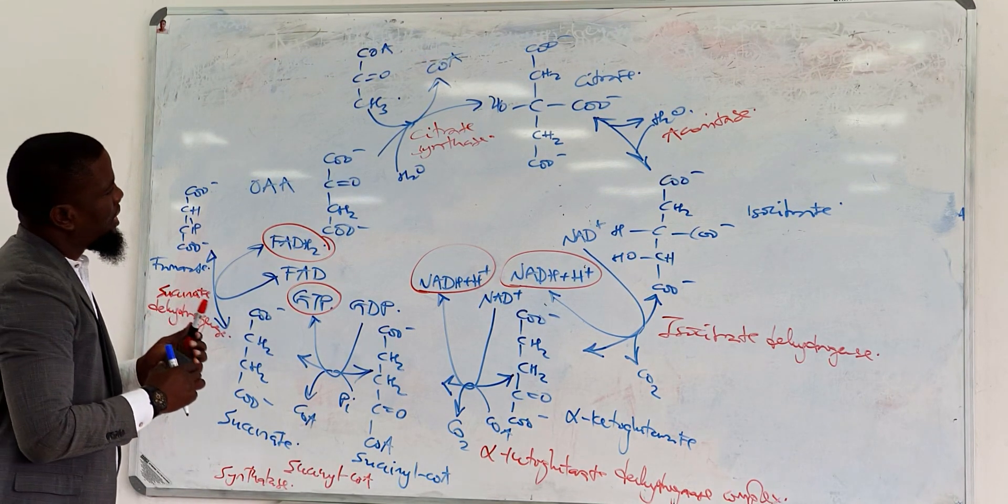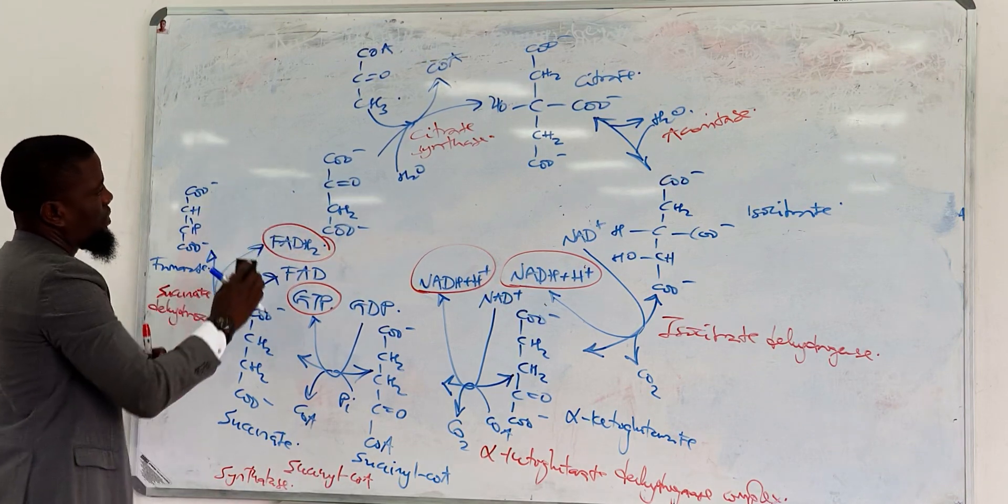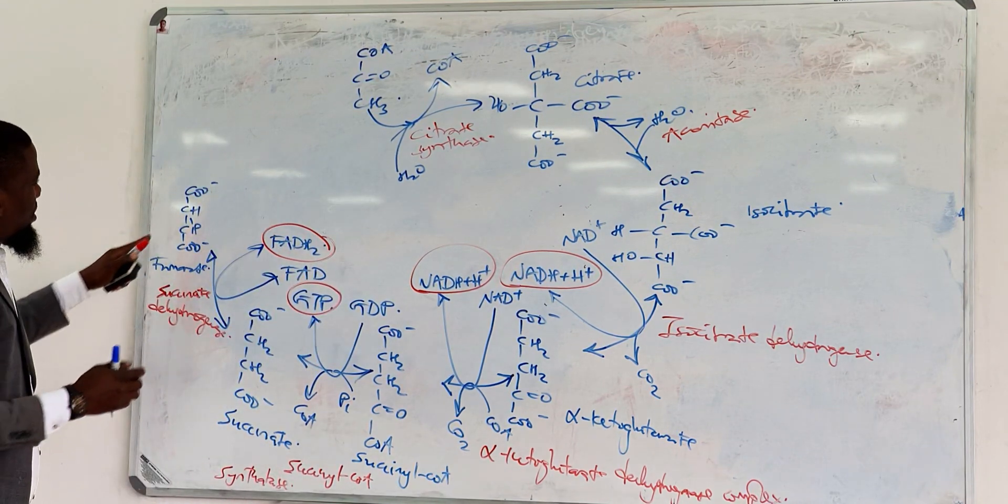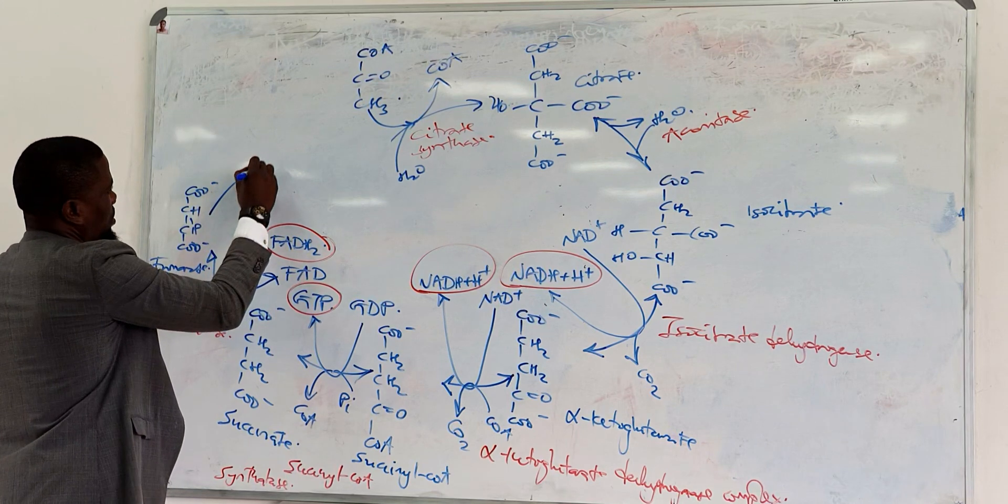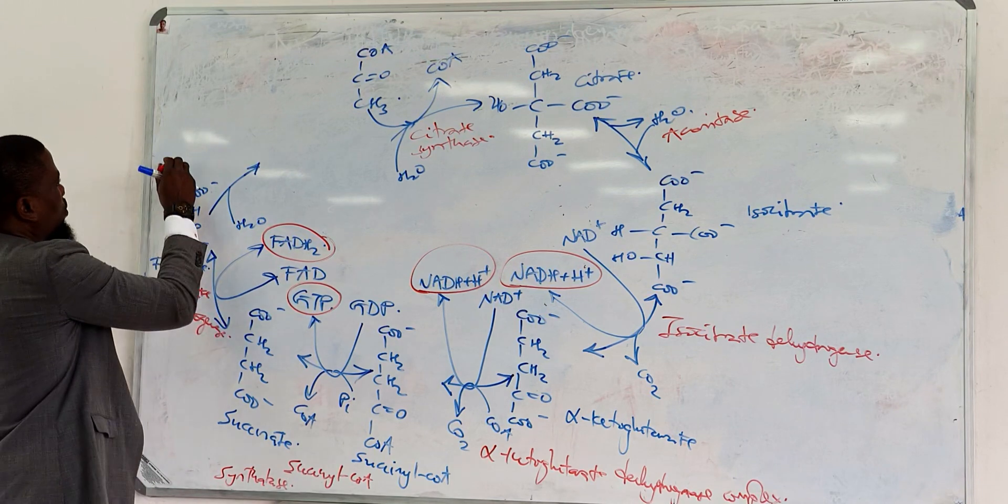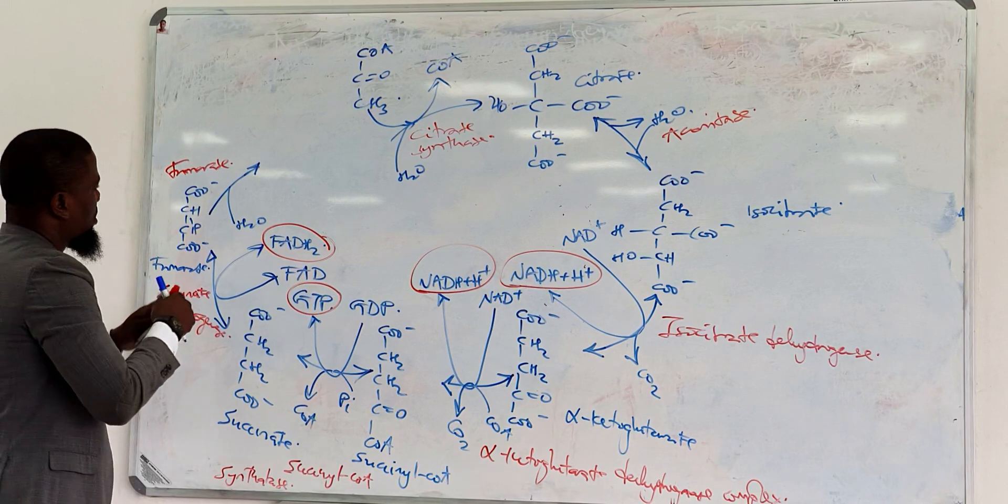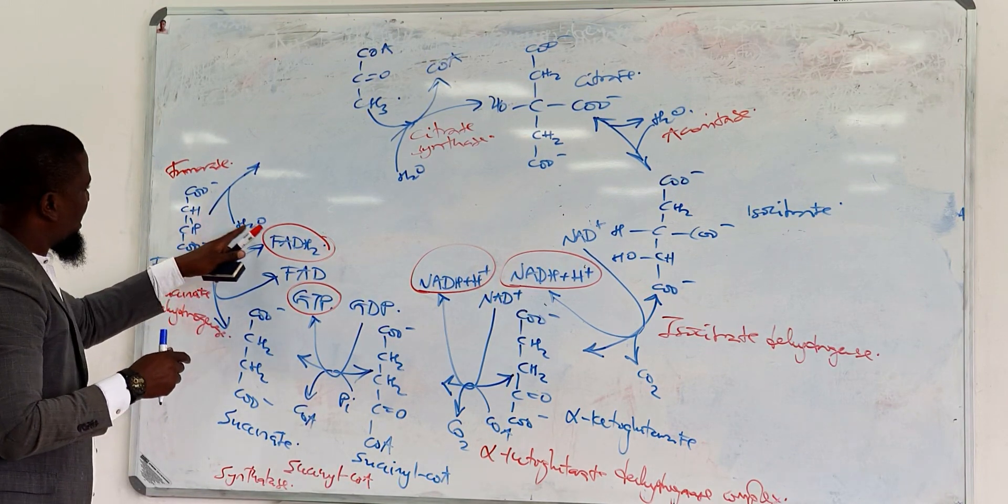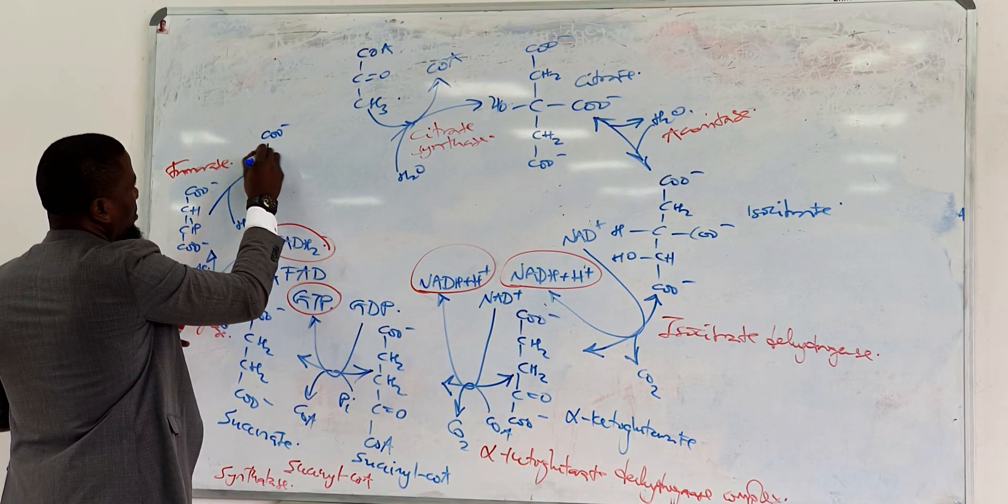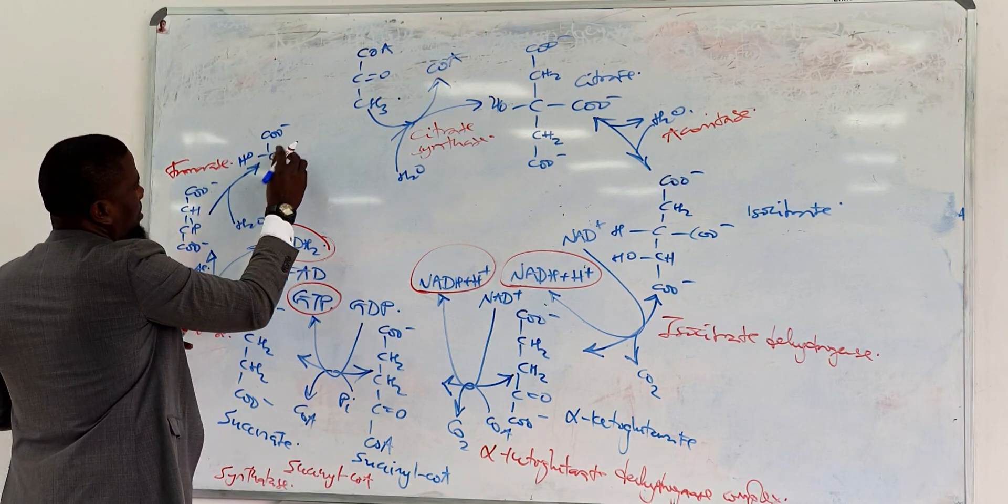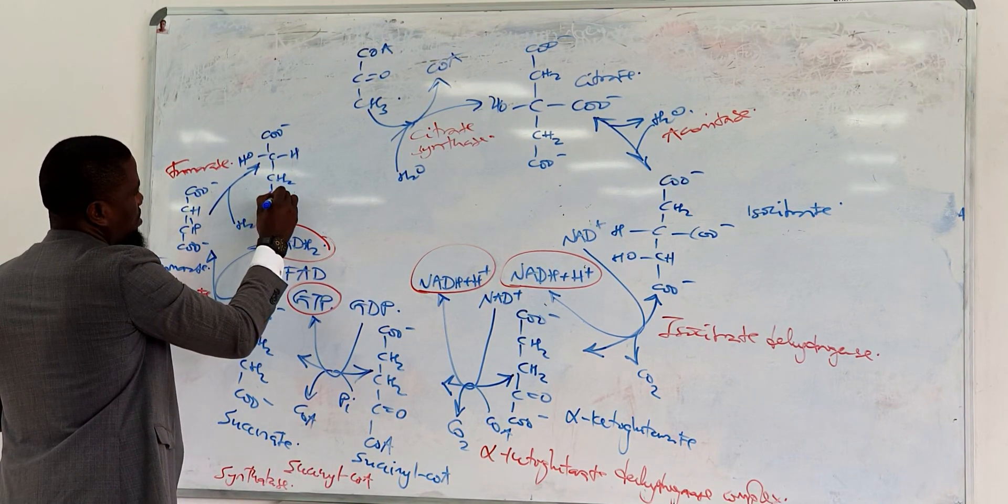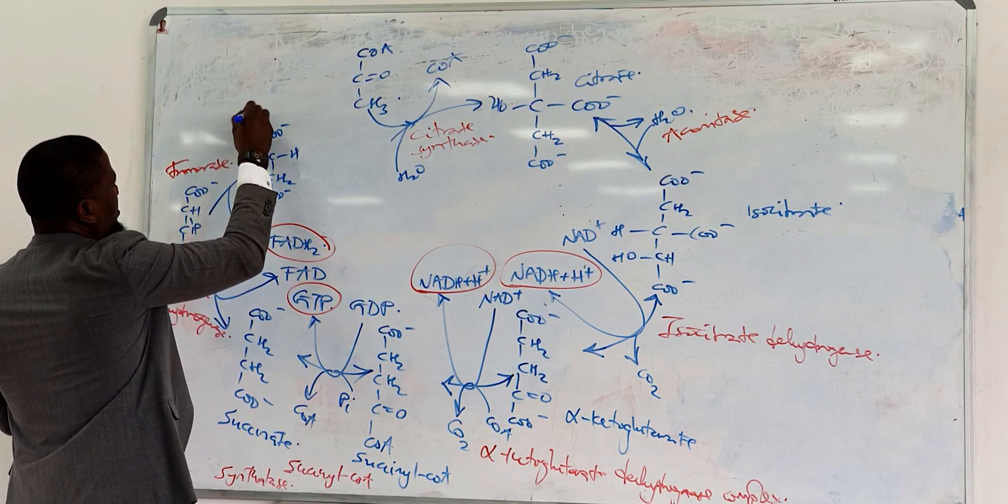Then the next reaction is that this, allow me to move this a little bit so that it looks clearer. This fumarate would then be hydrated with the help of the enzyme called fumarase. One hydrogen comes there, the hydroxyl group attaches here. End product is malate.